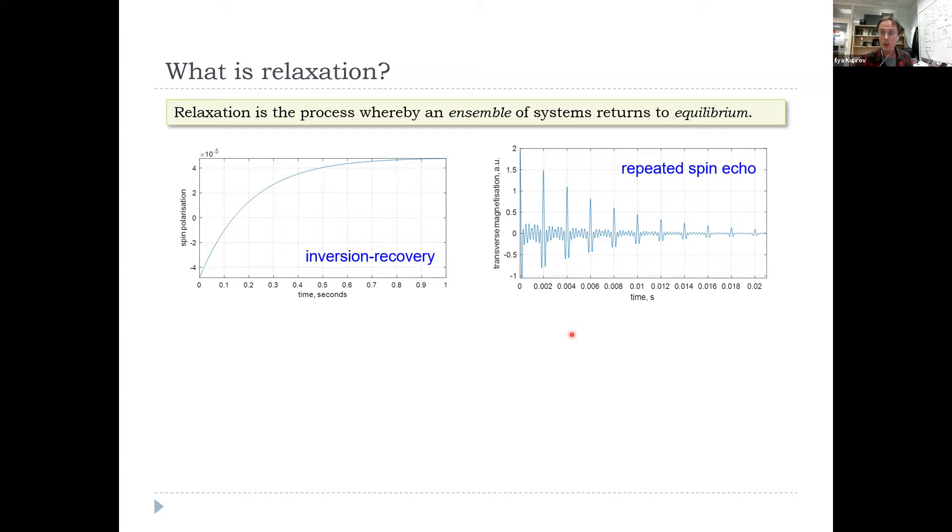All of you chemists and physicists hopefully remember the inversion recovery experiment in magnetic resonance when you flip the magnetization around and it slowly recovers, and then the spin echo, the CPMG experiment, where you repeatedly refocus the transverse magnetization, but it still eventually fades to its equilibrium value of zero.